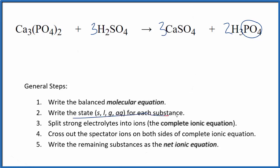Now we need to write the state for each substance and that looks like this. Calcium phosphate, phosphates in general, they're insoluble. So that's going to be a solid. Sulfuric acid, that's a strong acid, so that's going to be aqueous. It'll break apart into its ions.